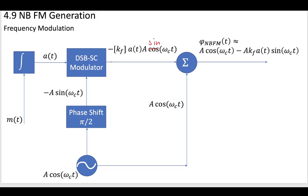We would get the first part using our DSB-SC modulator—a sine wave that has been modulated by a version of the message.